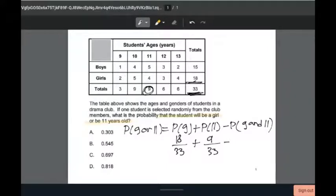Minus the probability of the student randomly selected being a girl and being 11 years old, which will be 4 over 33.